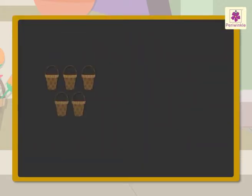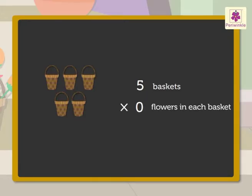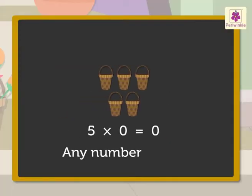Here, there are five baskets, but there are no flowers in each. That is, there are zero flowers in each. So, five into zero is equal to zero. Thus, we say that if zero is multiplied to any number, the product is always zero.